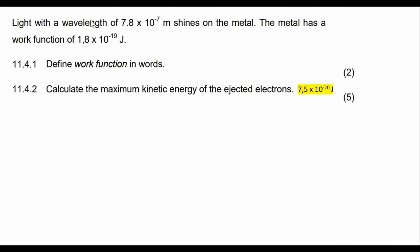They tell us that we've got light with a wavelength of 7.8 times 10 to the minus 7 that shines on a metal. The metal has a work function of 1.8 times 10 to the minus 19 J.